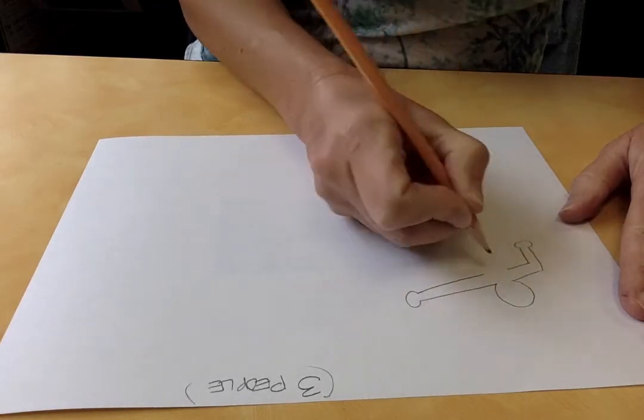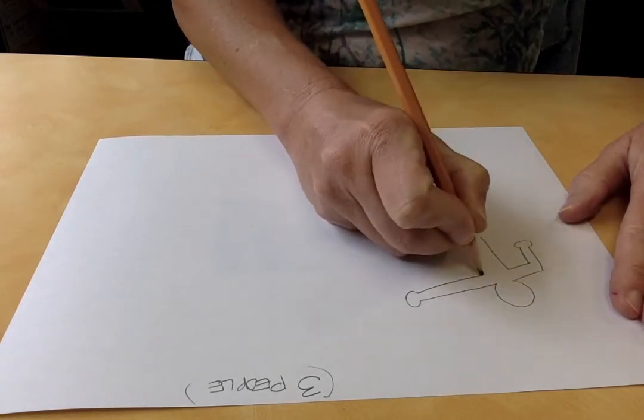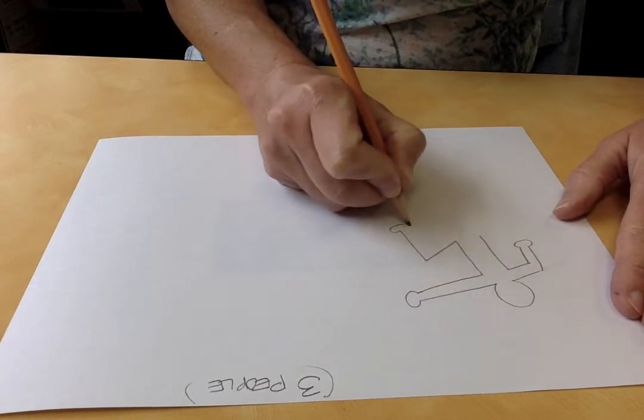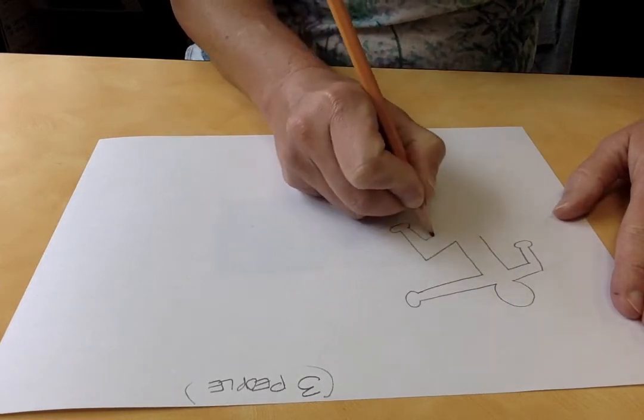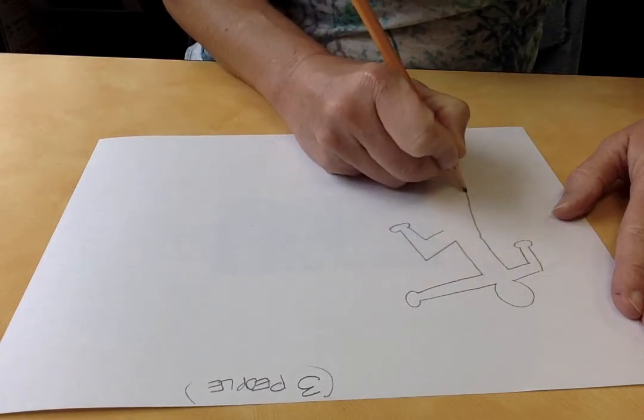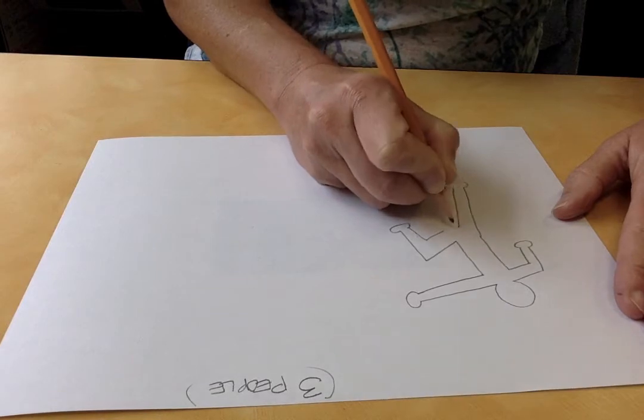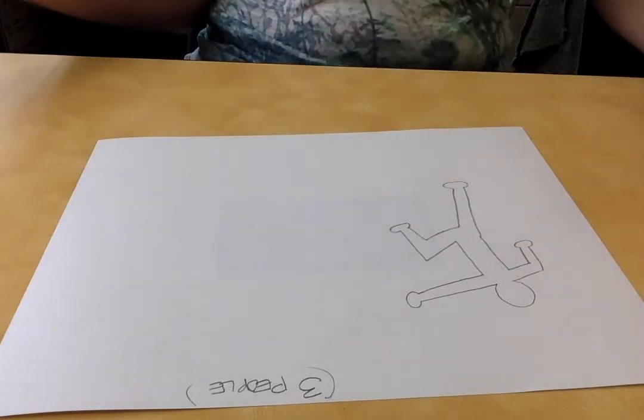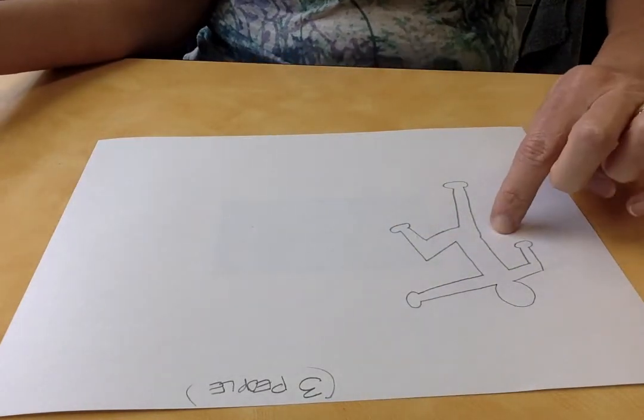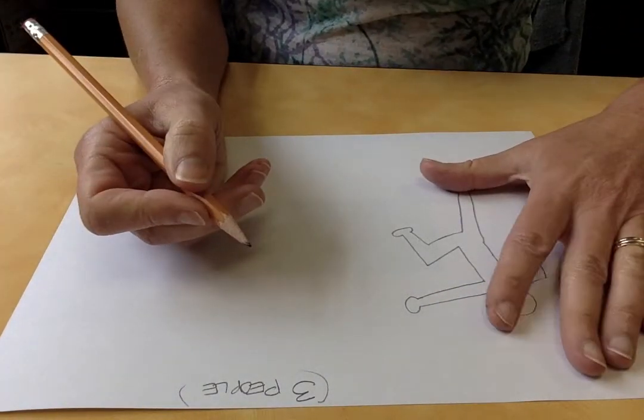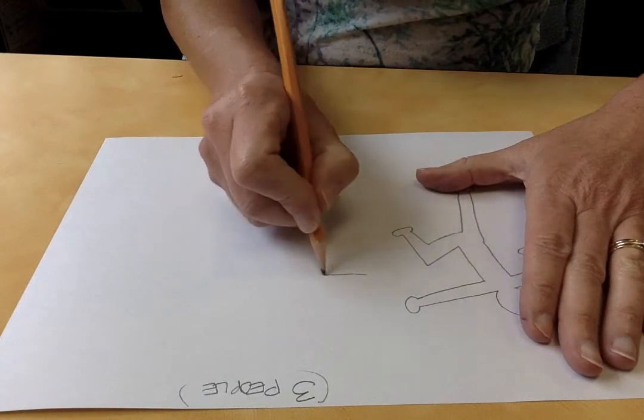I'm using kind of a potato-type shape for the hand. There's the body, potato shape for the foot. Okay, so there's one figure, one person. I'm gonna make another one doing something different.